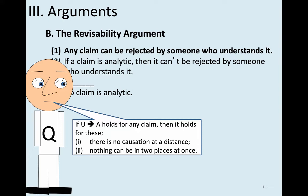Take a claim like 'sisters are female siblings.' If you understand that claim, then you're going to assent to it — you're going to say yes to it. Or take a claim like 'nothing is entirely red and green at the same time in the same place across its entire surface.' If you understand color terms, you'll assent to that claim. That's the idea.